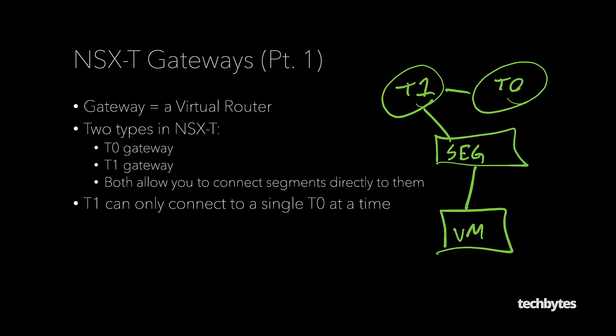Let's draw out our VM and connect that up to make this picture complete. We have a VM connected to our overlay segment, and we do that in vCenter. We go into vCenter, edit the VM settings, select this segment or port group, and that is how we connect into this network.